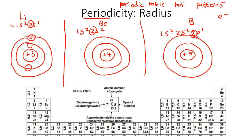The electrons going around are negative, so they would be attracted towards the positive nucleus, which is filled with protons. Boron has five protons, so it has a much stronger attraction force.